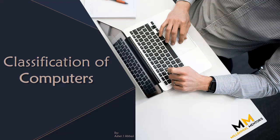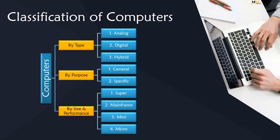Classification of Computers. Computers are classified into three categories: by type, by purpose, and by size and performance.